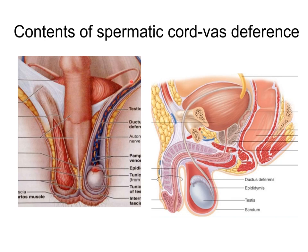From the deep inguinal ring, the vas deferens moves towards the base of the bladder, then joins with the duct of the seminal vesicle to form the ejaculatory duct. The ejaculatory duct passes through the prostate gland and opens into the prostatic part of the male urethra. You can see the bladder, the urethra, and the ejaculatory duct opening into the prostatic urethra clearly in this diagram.